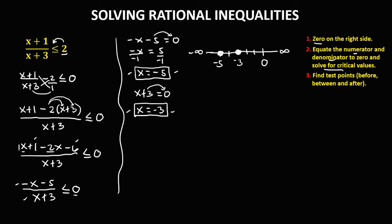Then find the test points. Before the first critical value — before negative 5 — we have negative 6. Then between the two critical values, we have negative 4. And after the last critical value, we have negative 2. Then place these numbers in a sign analysis table.